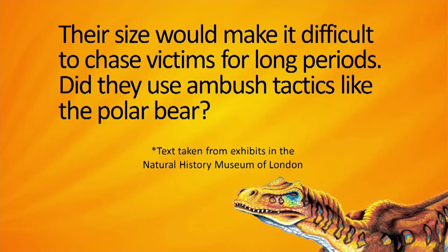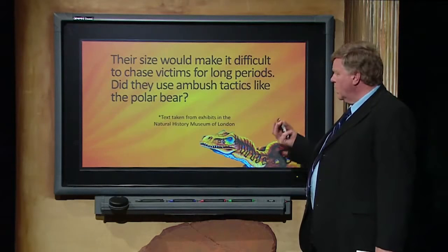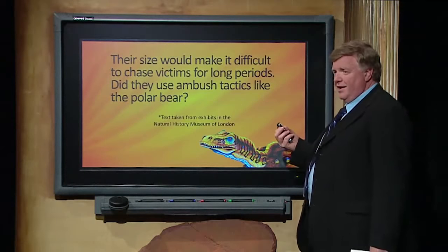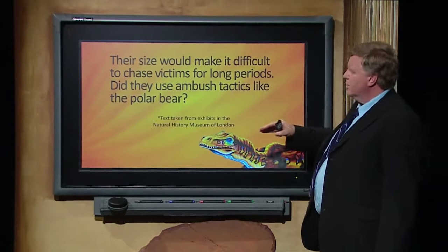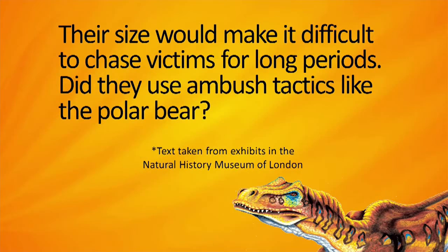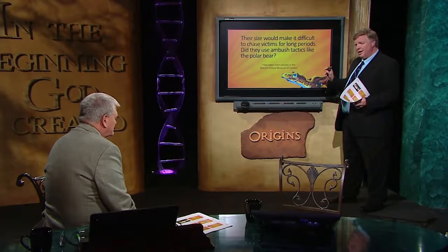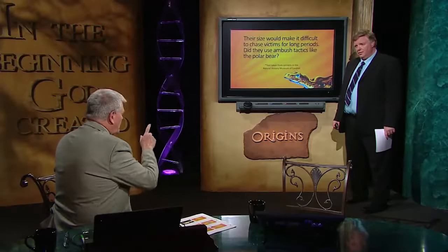A display about Allosaurus says 'their size would make it difficult to chase victims for long periods' — but there's no evidence that being large means an animal can't chase victims for a long time. There's no correlation. Then it asks: 'Did they use ambush tactics like the polar bear?' They're trying to borrow from polar bear behaviour to describe Allosaurus. But all they have are bones and fossils — they don't know how the Allosaurus actually behaved. It's a story being created through language, and imagination plays a big part.